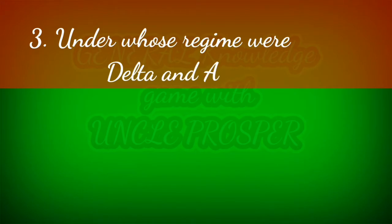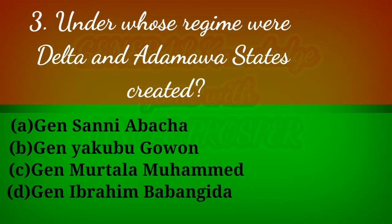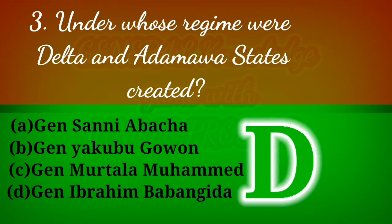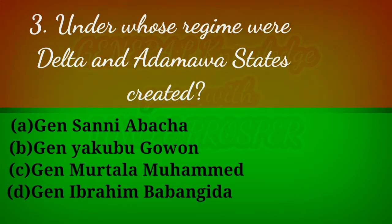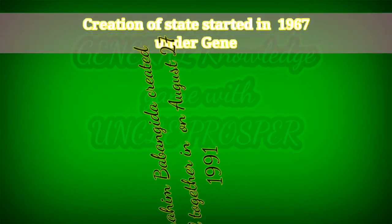Try to pause the video and answer the questions before you see the actual answer so you can test your ability. Question three: Under whose regime were Delta and Adamawa states created? The answer is (d) General Ibrahim Babangida. It was during his regime that these two states were created. Creation of states in Nigeria began in 1967 during General Yakubu Gowon's regime, who created 12 states. Babangida created Adamawa, Delta, and seven other states — nine in total — on August 27, 1991.